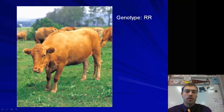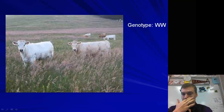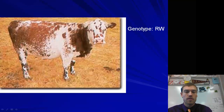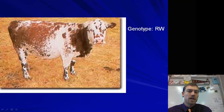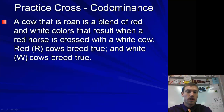So here's our red cow, which is big R, big R. Our white cow is big W, big W. And then the roan cow, which has white and red coloration, it would be big R, big W. So that would be codominance — they are both being shown.